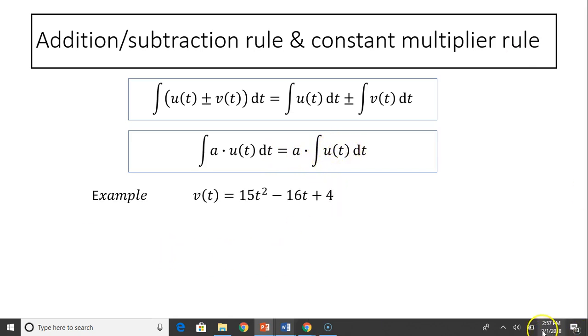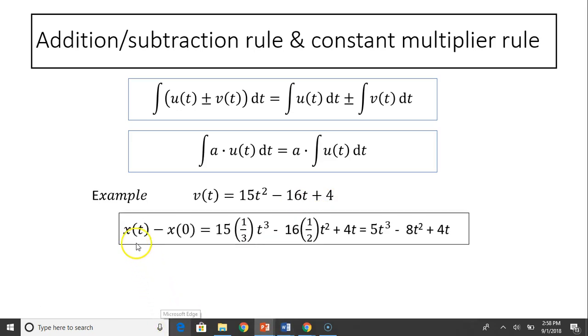For example, here is v(t) equals 15t² minus 16t plus 4. How do you integrate this? So this looks like addition and subtraction first. Then we also have multipliers 15 and 16 and 4. So x(t) minus x(0) equals 15 times the original function whose derivative is t². That's 1/3 t³. In this case, n equals 2, so 1/(2+1) t^(2+1).